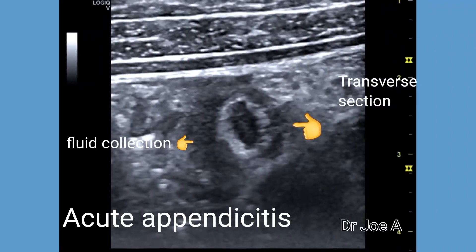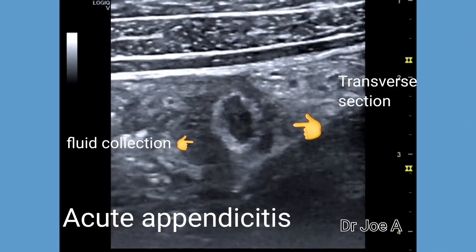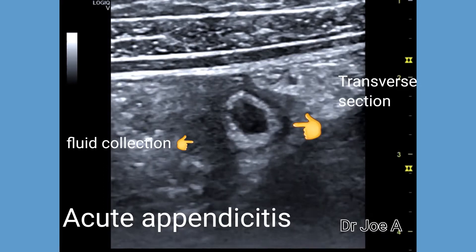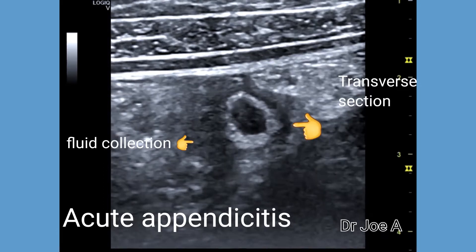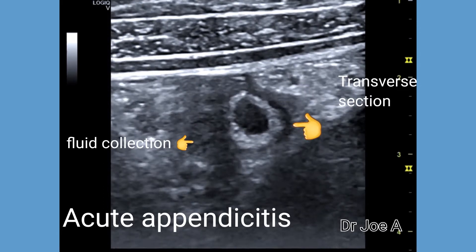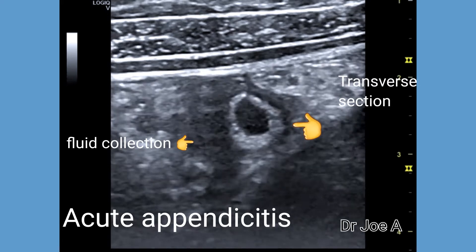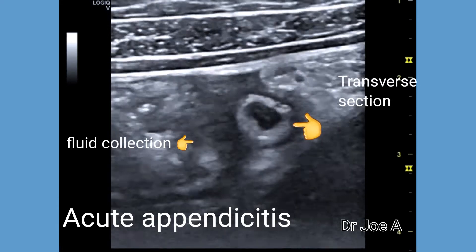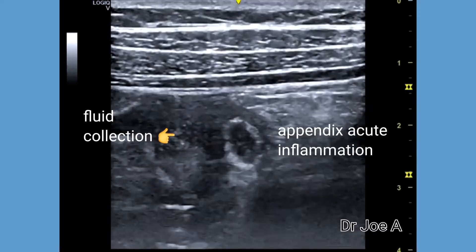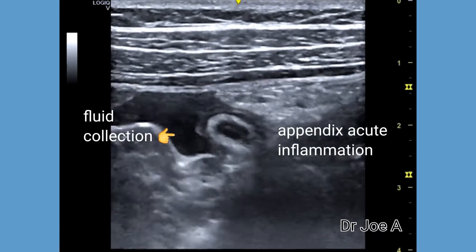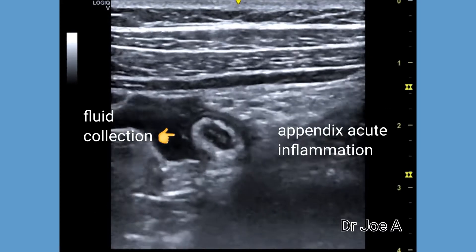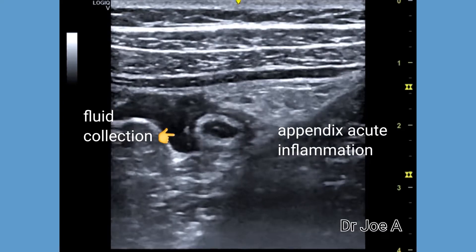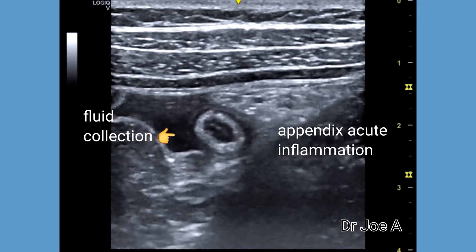This is a case of acute appendicitis in a young adult patient. The appendix in cross-section is seen here measuring more than 7 millimeters in diameter, with fluid collection around the appendix. The appendix cannot be easily compressed. These are all classic signs of acute appendicitis.